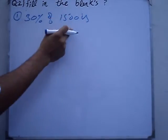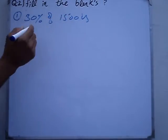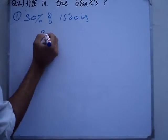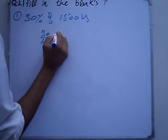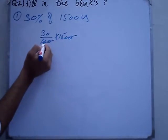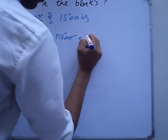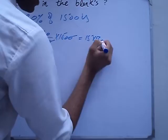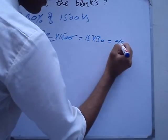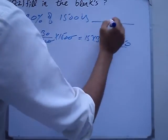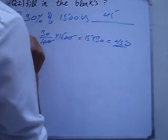30% of 1500. Write it as 30 over 100 into 1500. Cut it: 15 into 30 equals 450. The answer is 450. This is the solution.